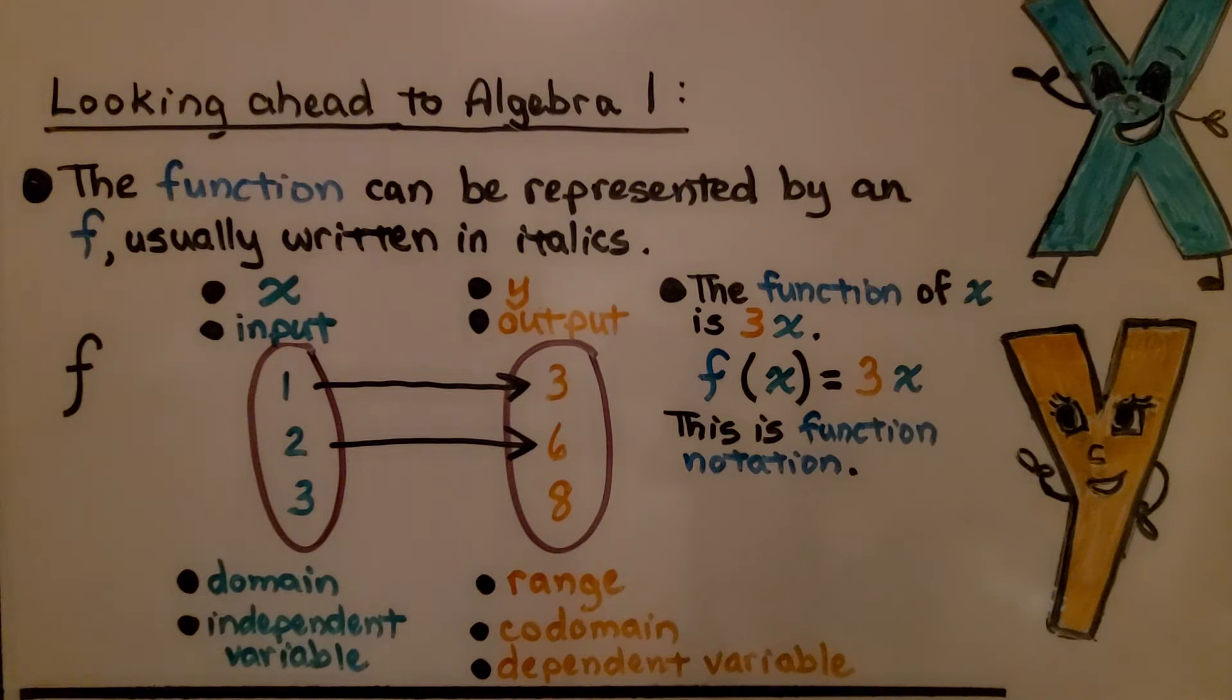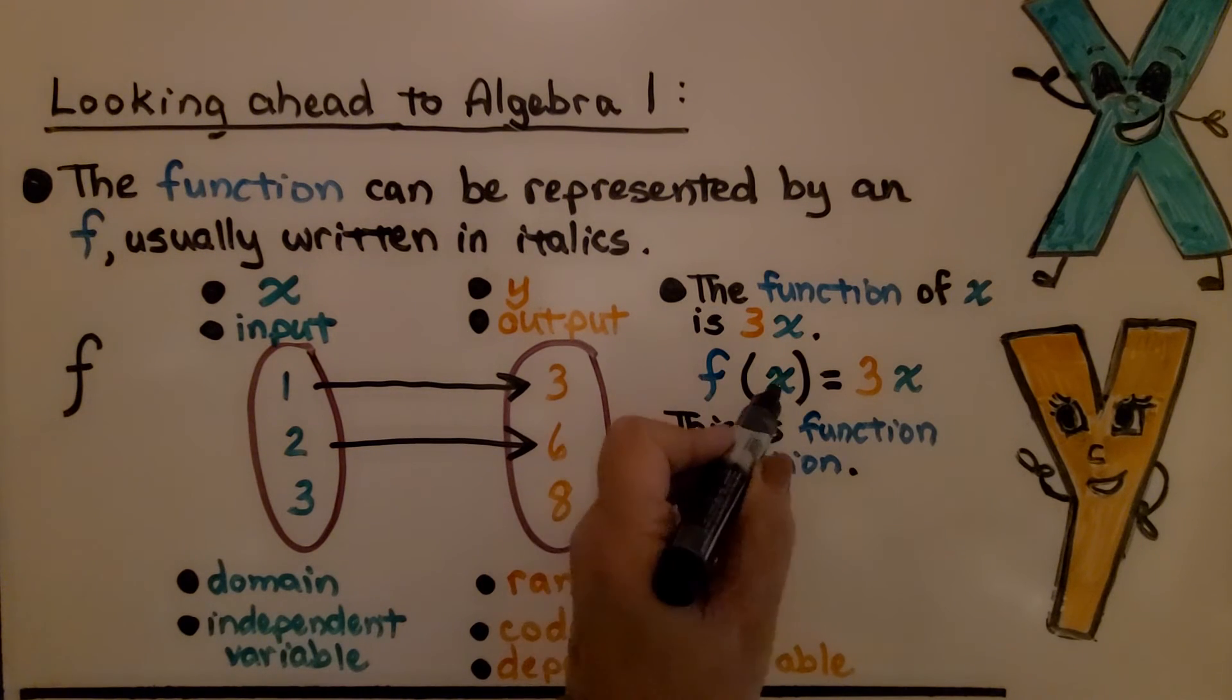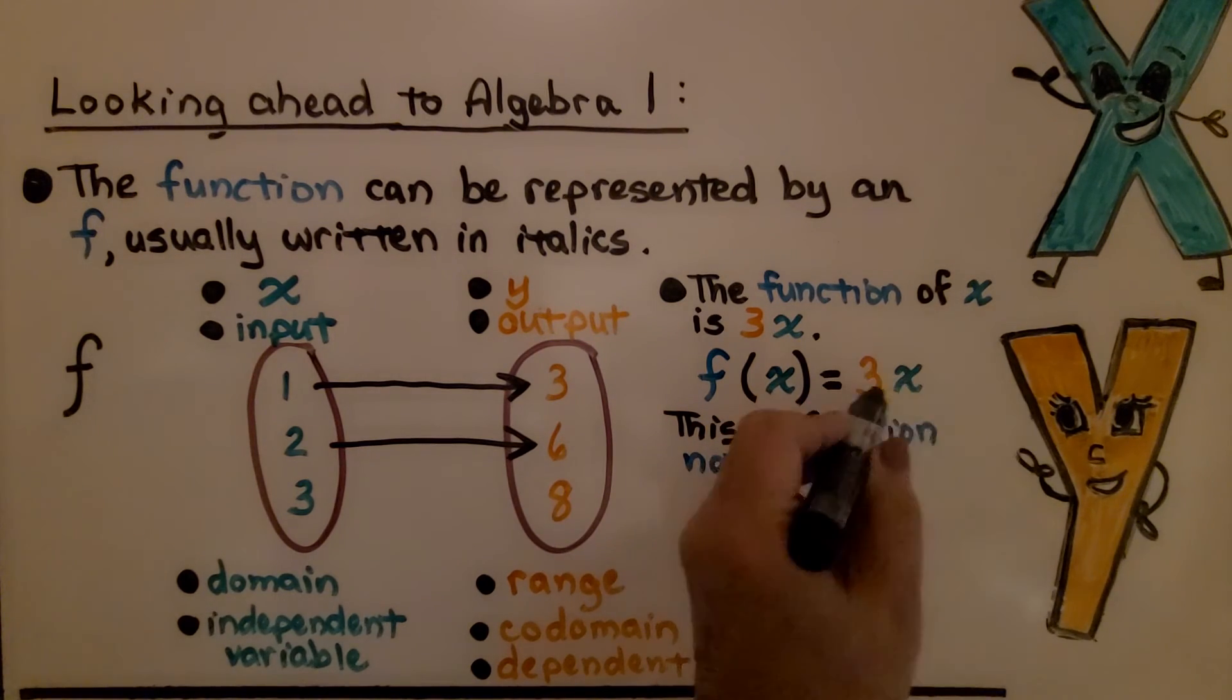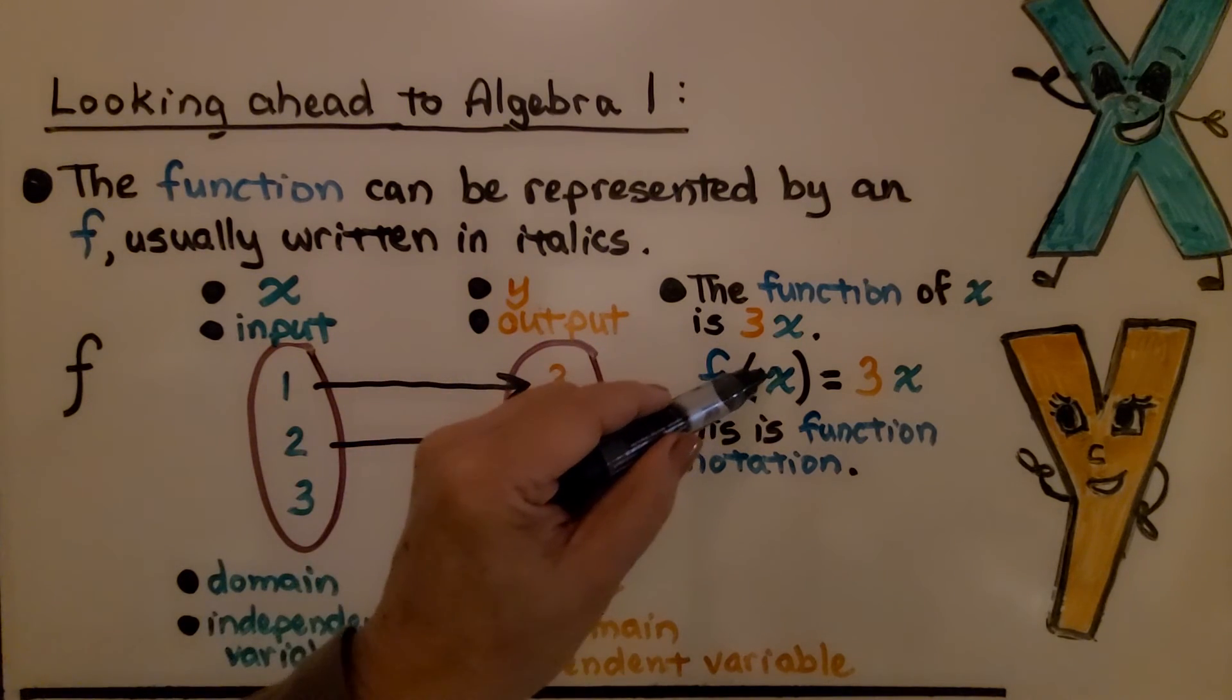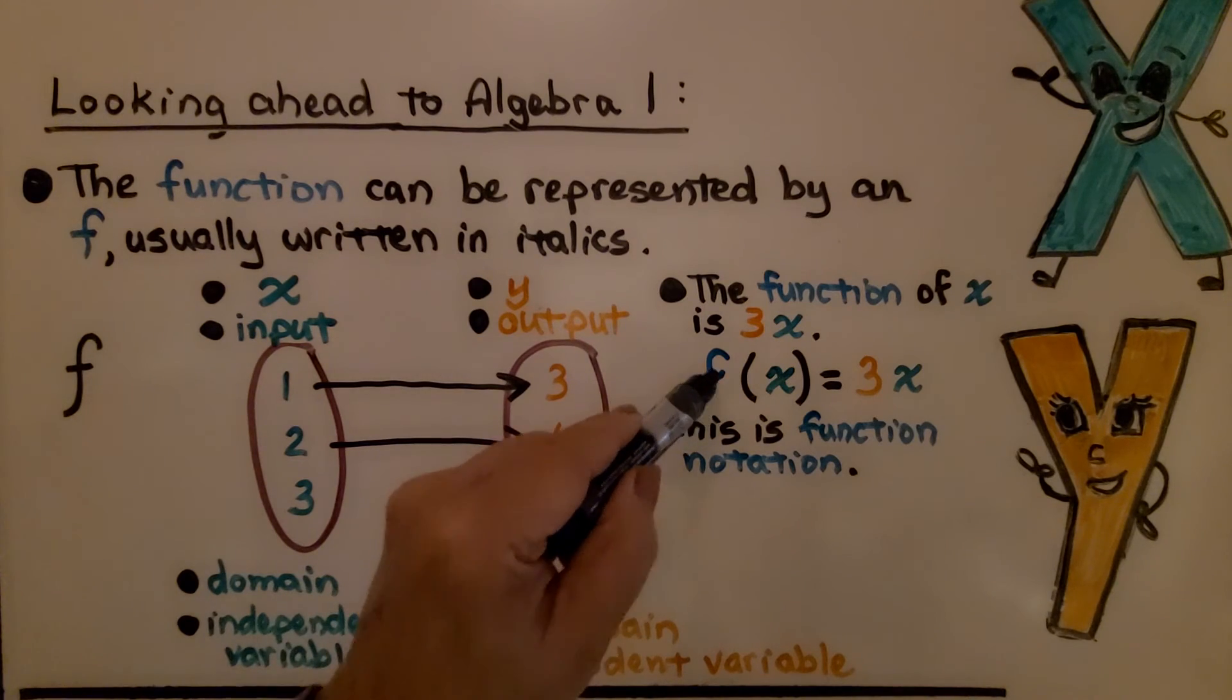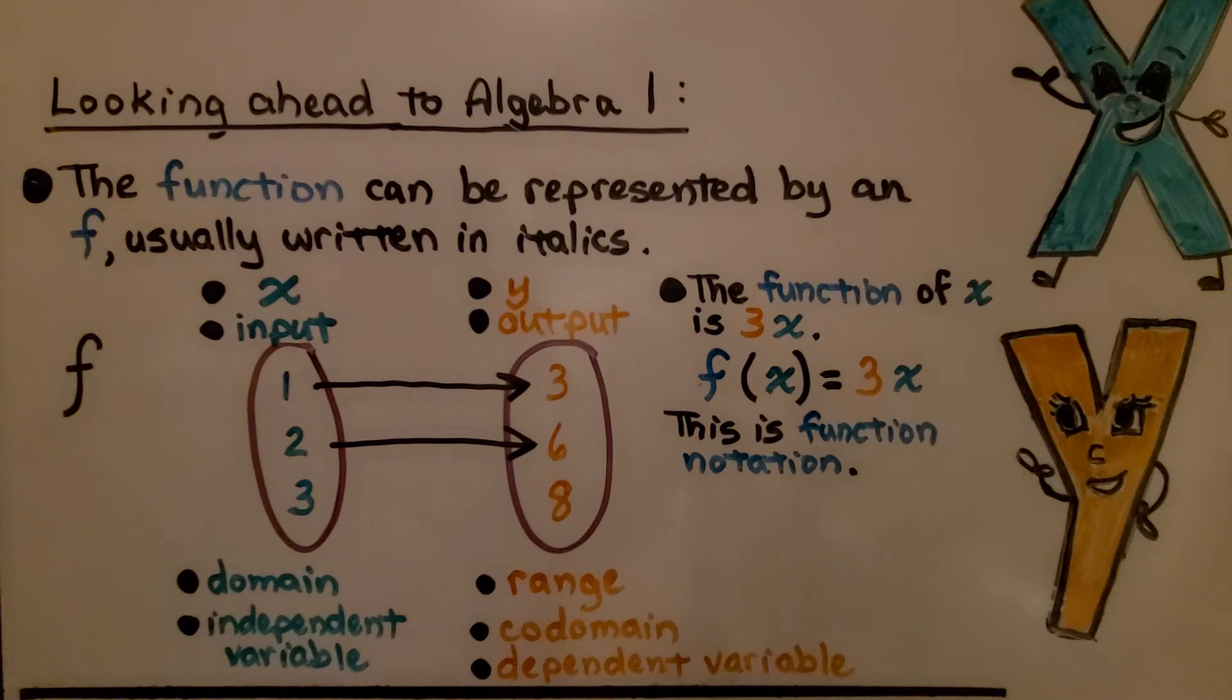And we can use function notation. It's when you see the f with an x inside parentheses, and then an equal sign, and then the rest of the equation. This would be read as the function of x is 3x. And you're going to see this, sometimes you'll hear it referred to as f of x, instead of function of x.